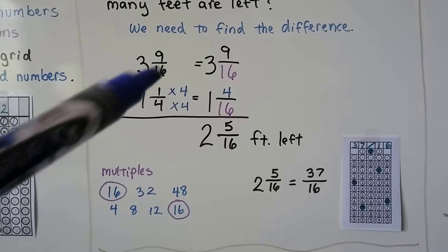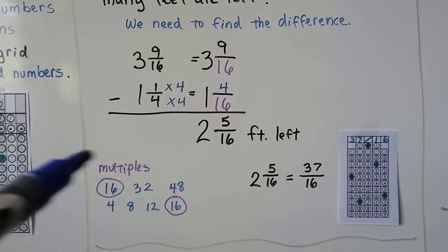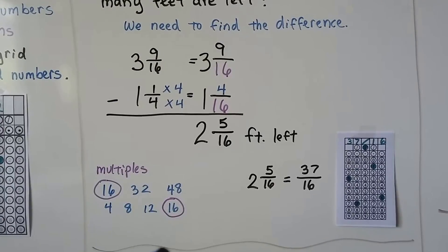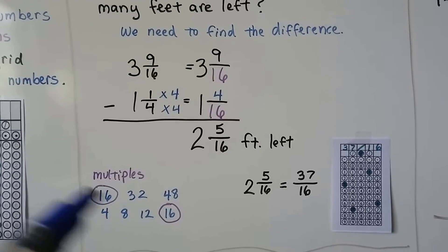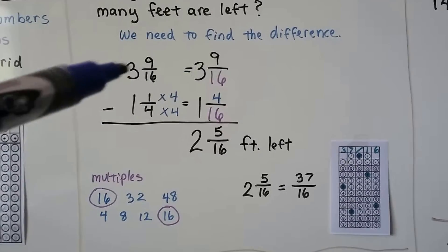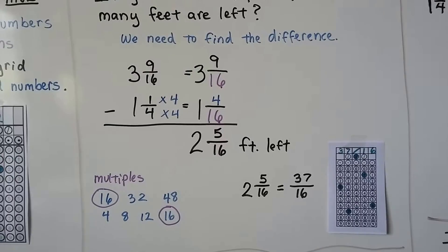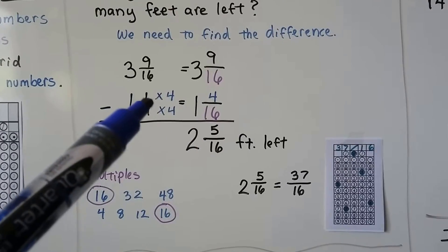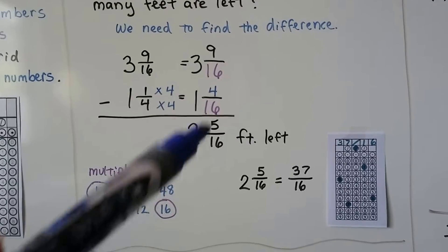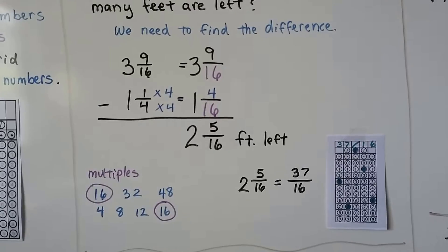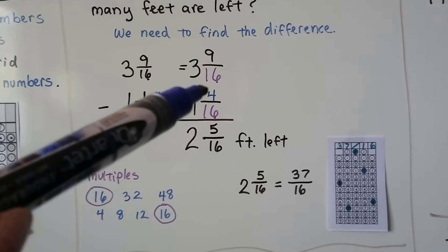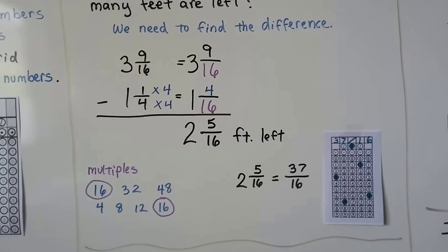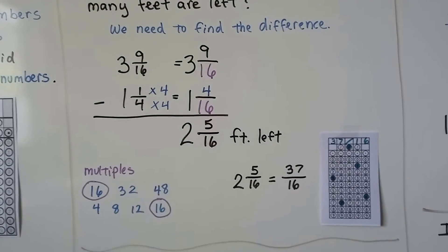We have 3 and 9/16s, and we need to take away 1 and 1/4, but they're unlike fractions with different denominators. We need to find a multiple that these denominators can meet at. For the denominator 16, we have 16 times 1 is 16, times 2 is 32, times 3 is 48. For the 4 denominator, we have 4, 8, 12, 16. They can meet at 16. This one slides over because he's already at 16, so we have 3 and 9/16s. The 4 needs to be multiplied by 4 to become 16. The 1 gets multiplied by 4, so we have 4/16s. We have 1 and 4/16s. Now we can have 9 take away 4 and get 5/16s, do the 3 minus 1 and get 2.